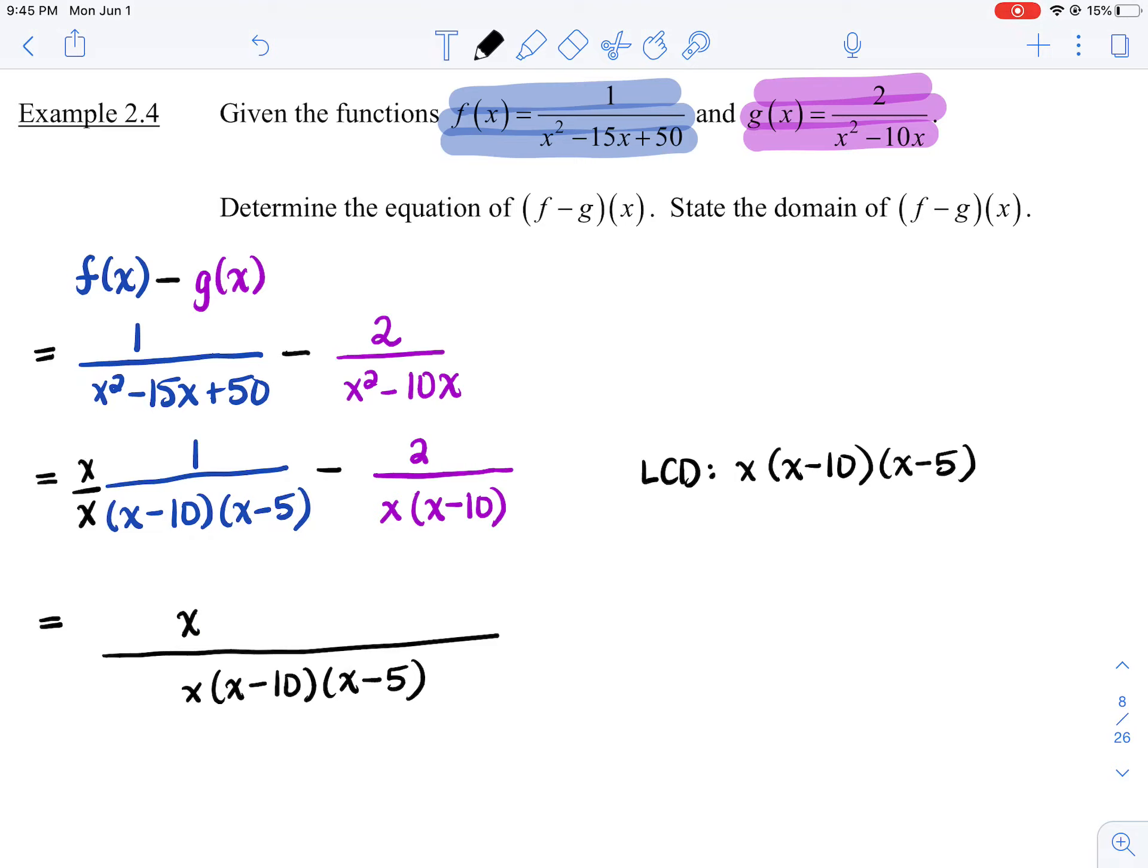For the second fraction, what are we missing in the denominator? Well, we got the x, we got the x minus 10, I'm just missing the x minus 5. So I'm going to multiply top and bottom by x minus 5. So we're going to get minus 2 times x minus 5.